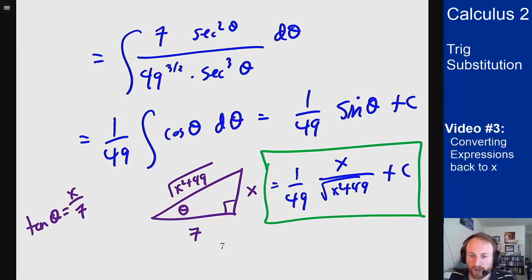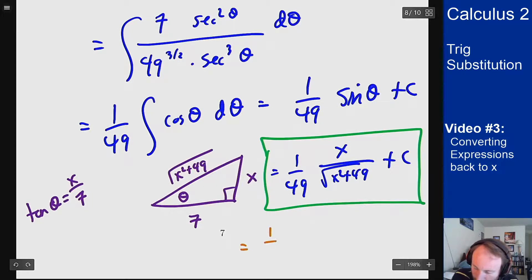And we also want to get it to an expression of x that is not just inverse trig functions, that's also less useful. It's much more useful to have algebraic expressions in terms of x and not something like 1 over 49 sine of tangent inverse of x over 7 plus c.